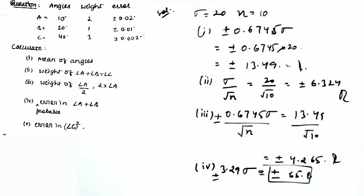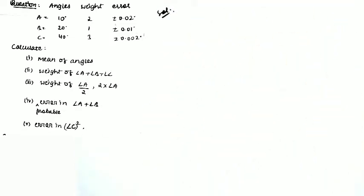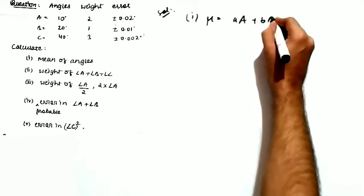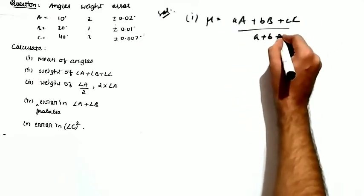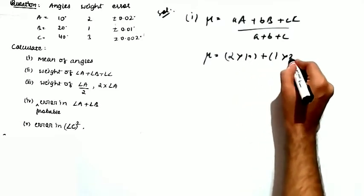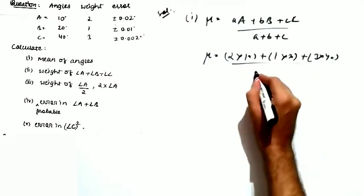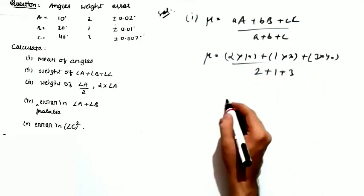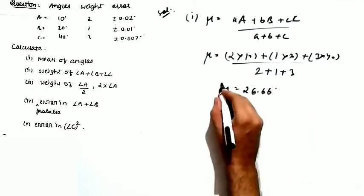The next question is related to weights. Three angles are given: angle A = 10°, angle B = 20°, angle C = 40° with weights 2, 1, and 3 respectively. The weighted mean is not calculated as (A + B + C)/3; instead you multiply each angle by its weight and divide by the sum of weights: (2×10 + 1×20 + 3×40) / (2+1+3) = 26.66 degrees.